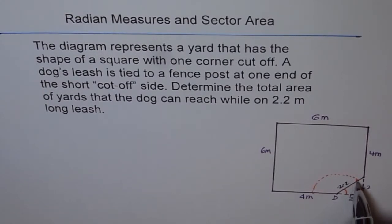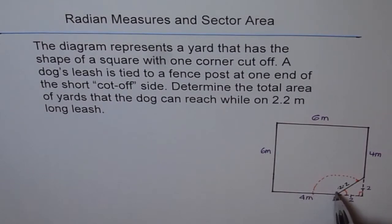Now if the dog could go all around, then we can find the area of the whole circle, and area of the sector will be in ratio depending on the angle through which this is. So basically what we need to find is this particular angle.